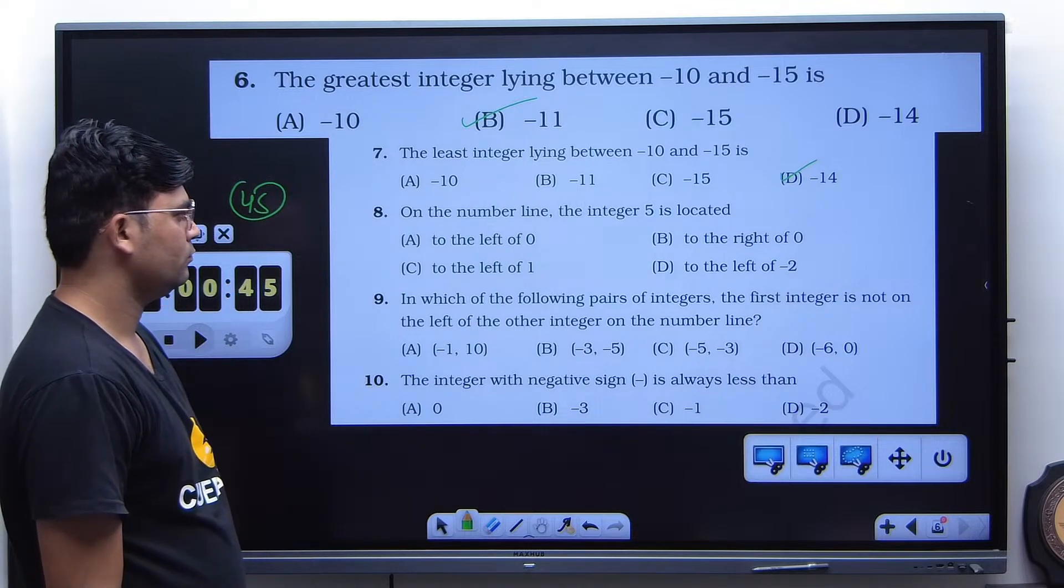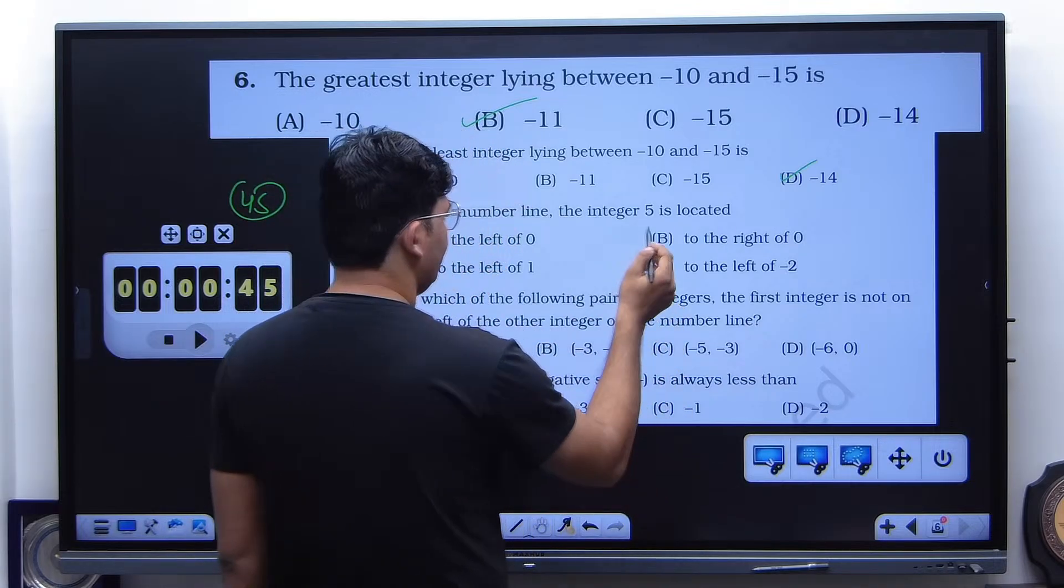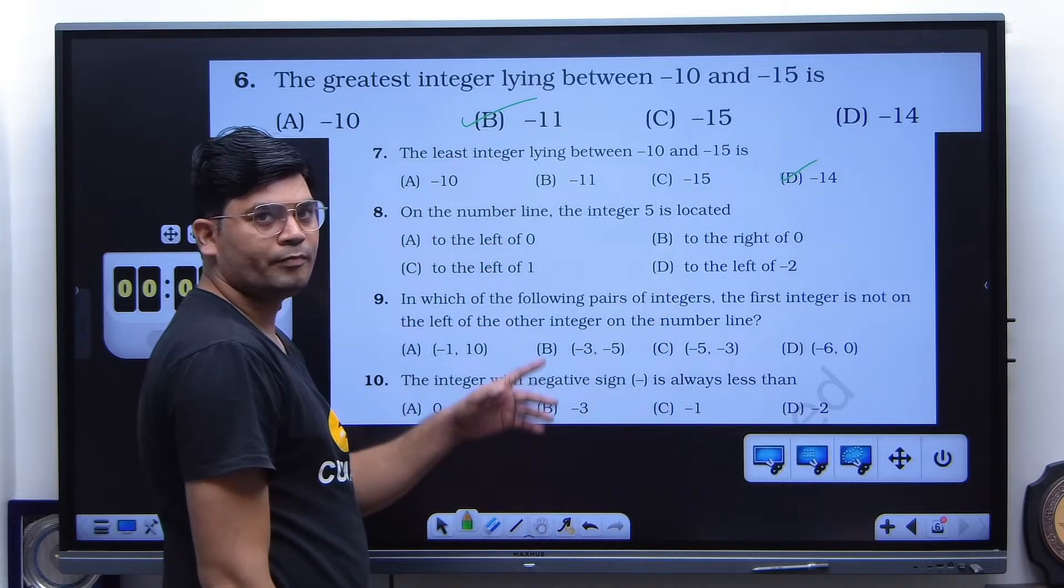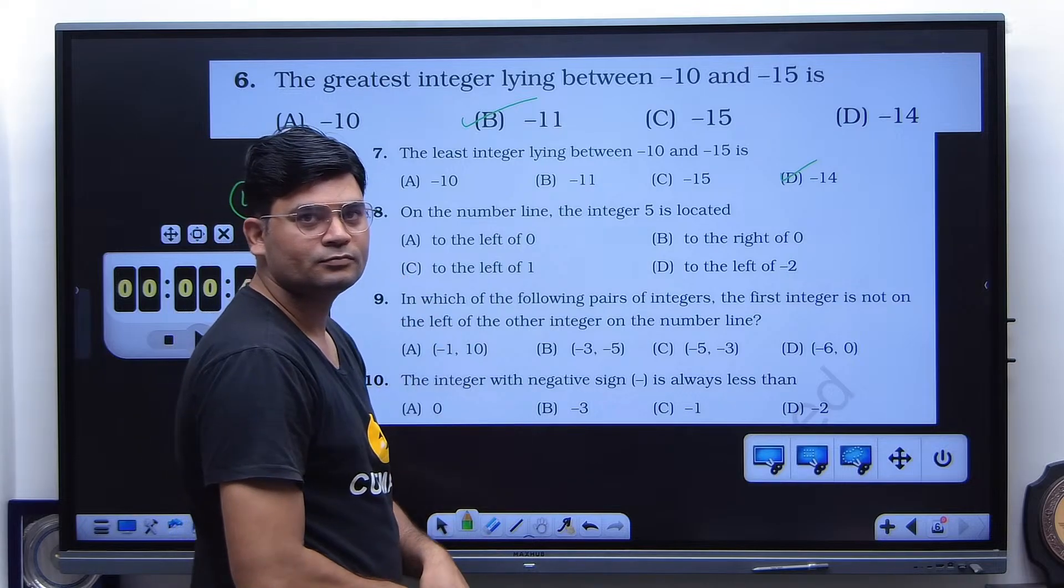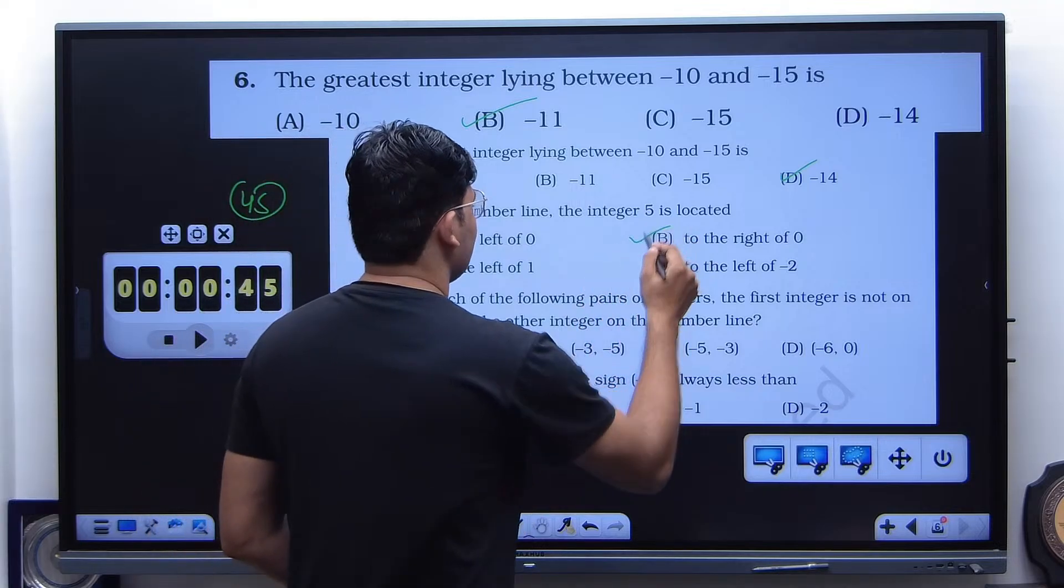Eighth one is B. B, B. Bravo or Delta? To the right of zero. See.